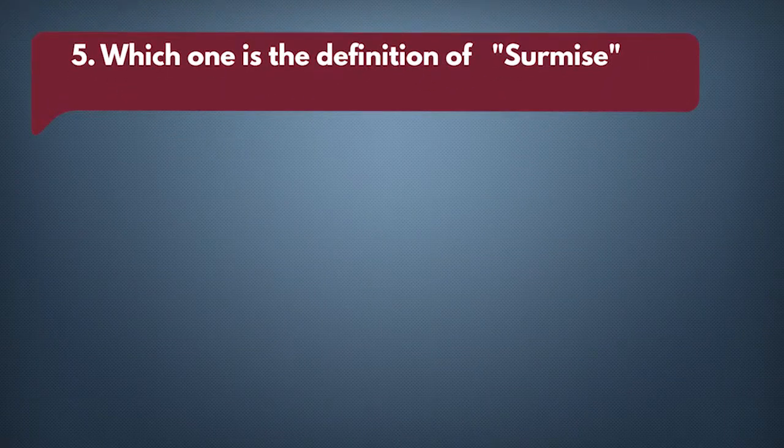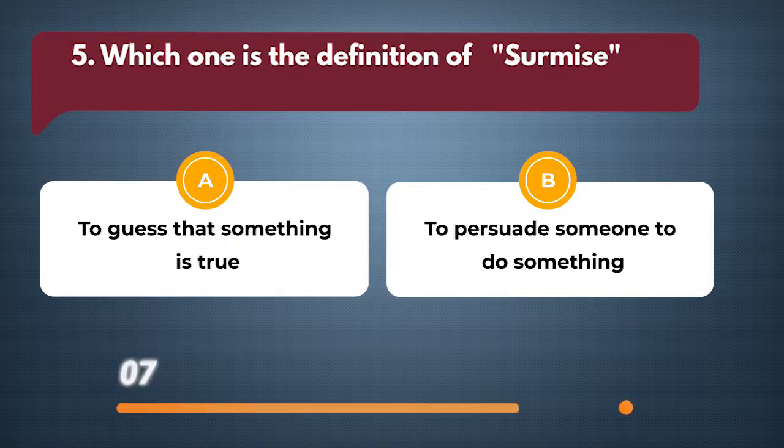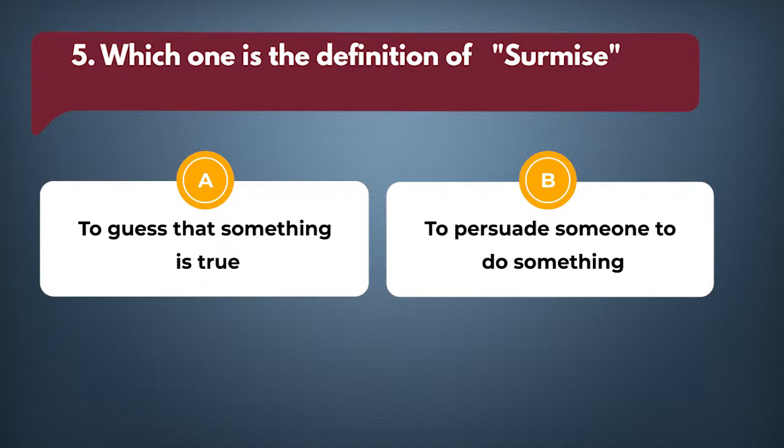Which one is the definition of surmise? A: To guess that something is true. B: To persuade someone to do something. The answer is A: To guess that something is true.